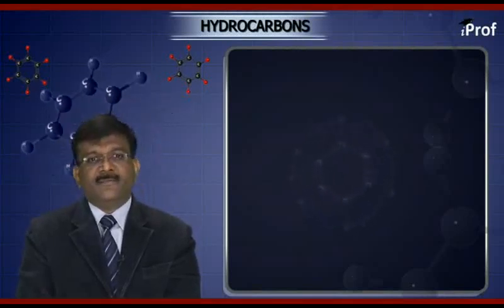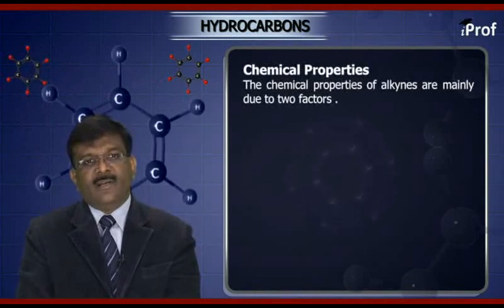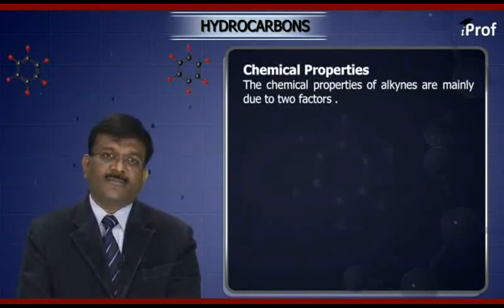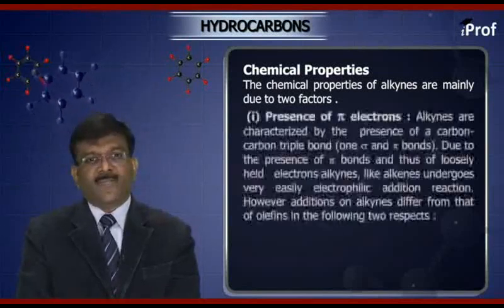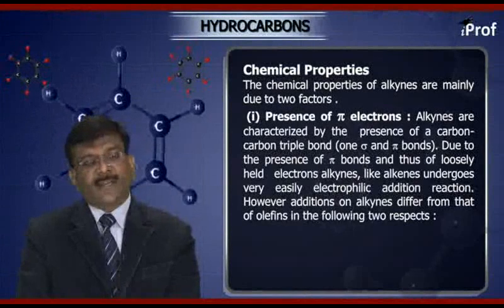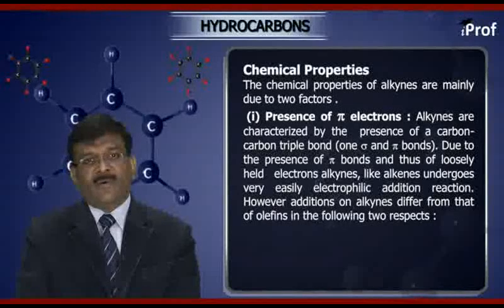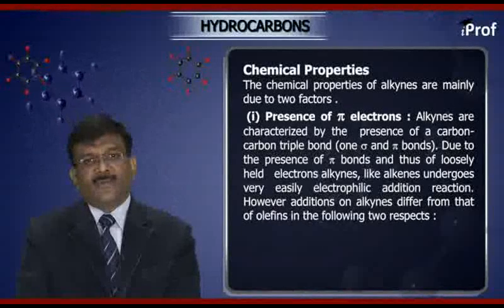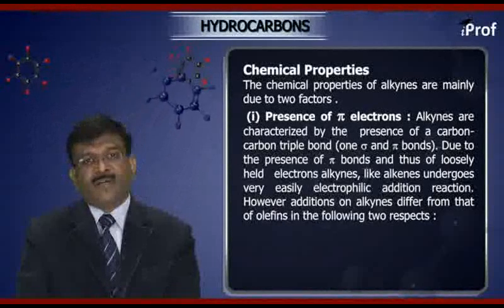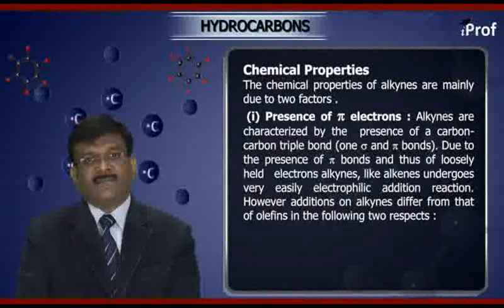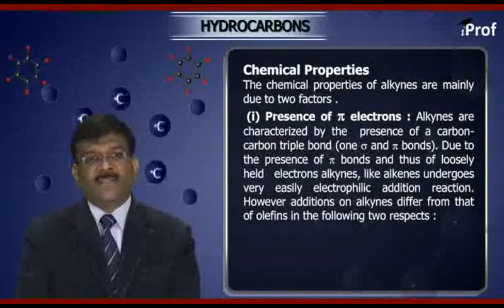Now we shall start with the chemical properties. The chemical properties of alkynes are mainly due to two factors. The first factor is the presence of pi electrons. Alkynes are characterized by the presence of a carbon-carbon triple bond — one sigma bond and two pi bonds. Due to the presence of pi bonds and thus loosely held pi electrons, alkynes, like alkenes, undergo electrophilic addition reactions very easily.